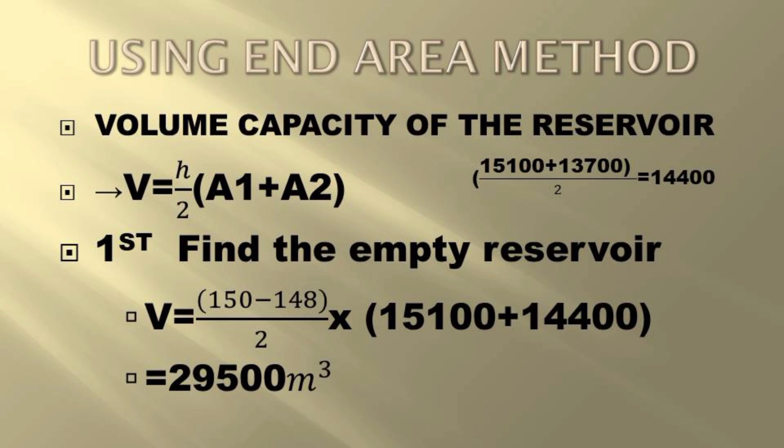As shown in the diagram above, h is the contour interval and V is the capacity of the reservoir. First, we find the volume of the empty reservoir. The height difference between the top contour of 150 meters and the water level provided, which is 148 meters.